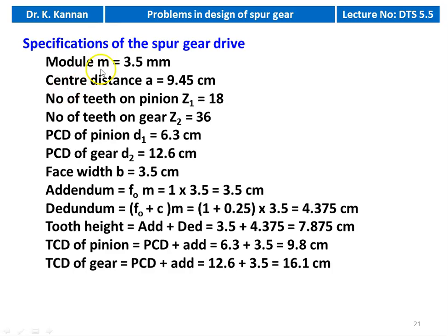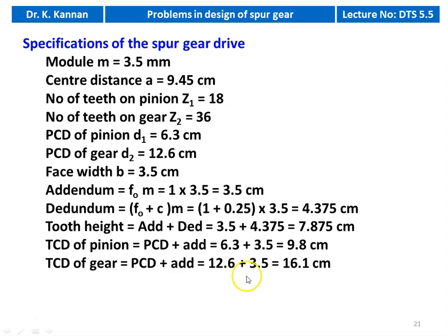Specifications of Example 2 drive: module = 3.5 mm, center distance A = 9.45 cm, Z1 = 18, Z2 = 36, D1 = 6.3 cm, D2 = 12.6 cm, face width B = 3.5 cm, addendum = 3.5 mm, dedendum = 4.375 mm, tooth height = 7.875 mm, tip circle diameter of pinion = 9.8 cm, tip circle diameter of gear = 16.1 cm. Write all specifications to get full marks.